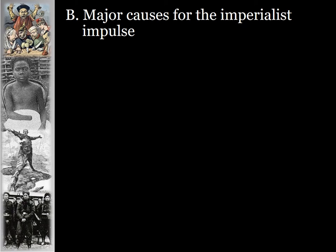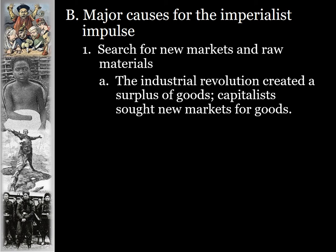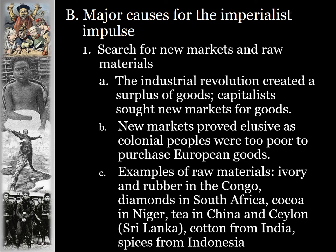The major causes for this imperialist impulse: first, the search for new markets and raw materials. The Industrial Revolution created a surplus of goods, and capitalists sought new markets to sell those goods in. The new markets proved elusive, as colonial peoples were too poor to purchase European goods. But access to raw materials did pay off — ivory and rubber in the Congo, diamonds in South Africa, cocoa in Niger, tea in China and Ceylon, cotton from India, and spices from Indonesia.